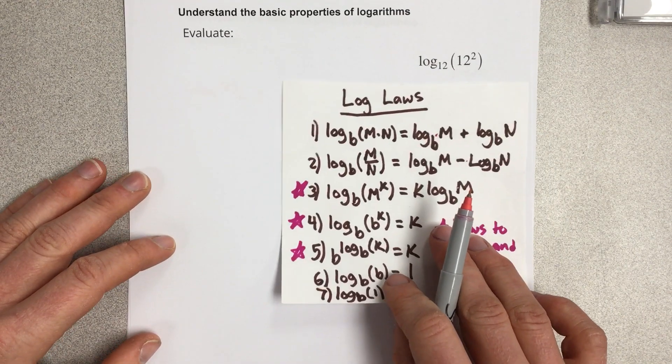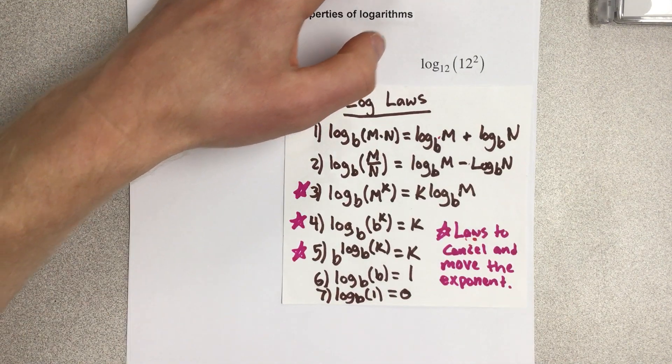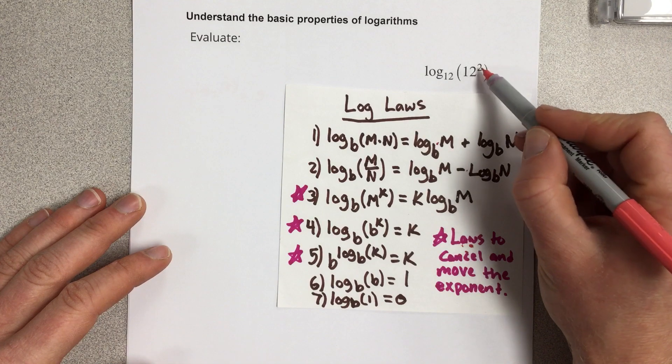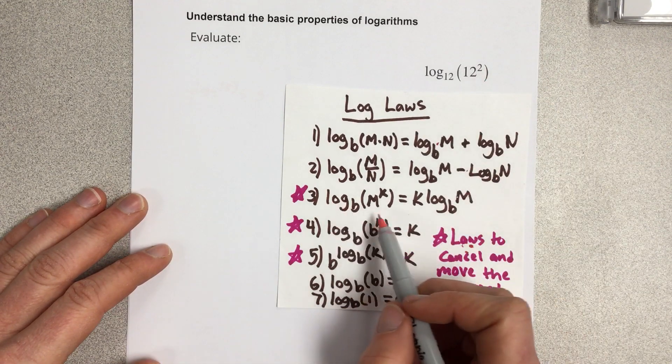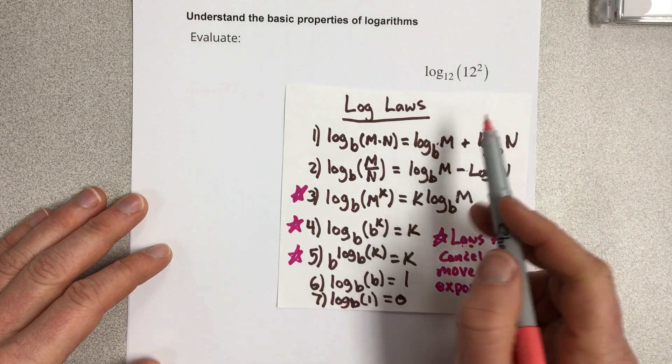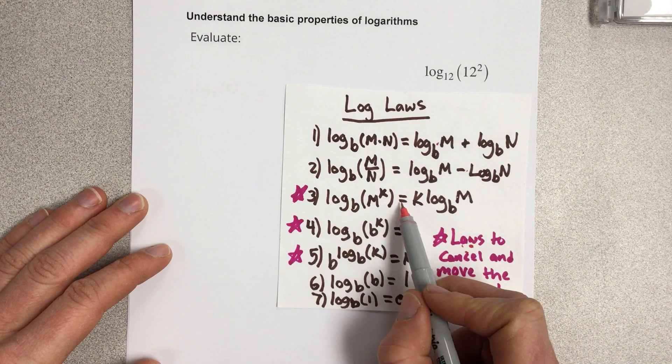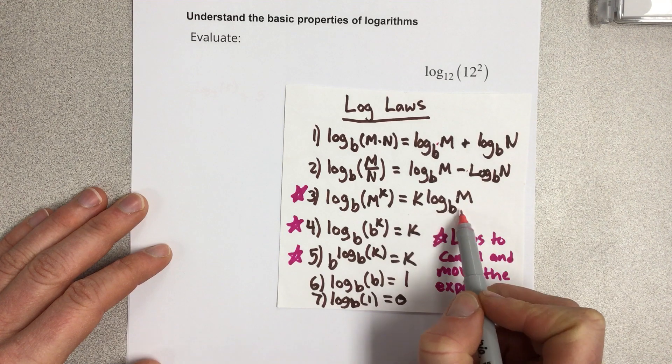If we look at our log laws, we can see that we have an exponent. Anytime we have an exponent, we can use this log law that states the exponent can come to the front. So log base b of m to the k power is the same as k log base b of m.